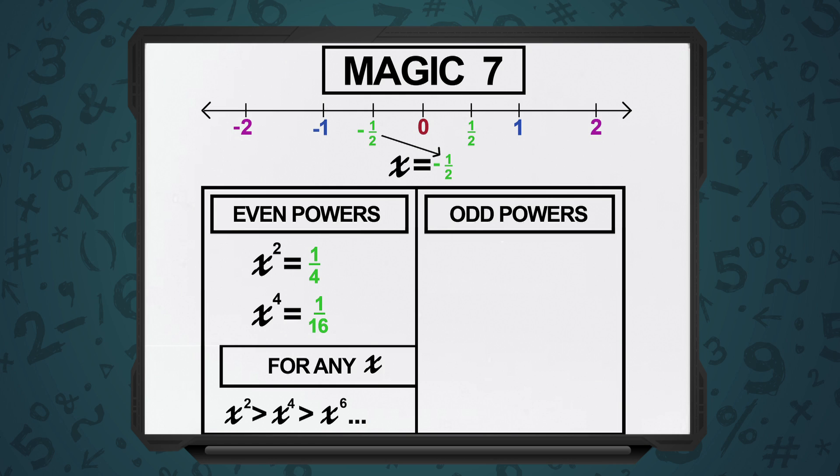x raised to 4 will be greater than x raised to 6, and so on and so forth. Because as you go higher in even powers, when x is equal to minus half, you are to the right of 0 but you're still shifting towards 0. So the values go on decreasing.